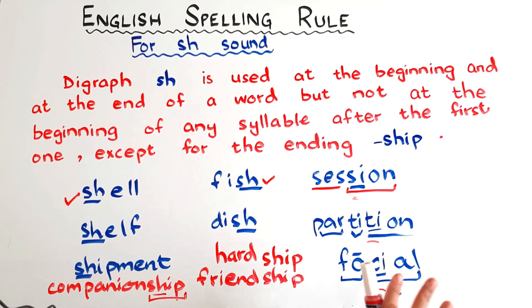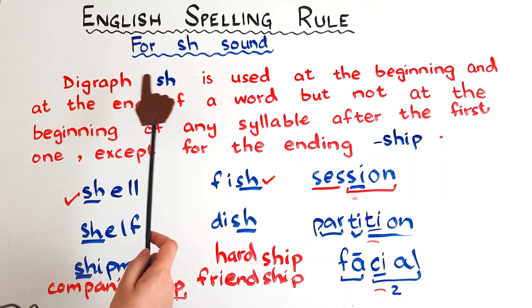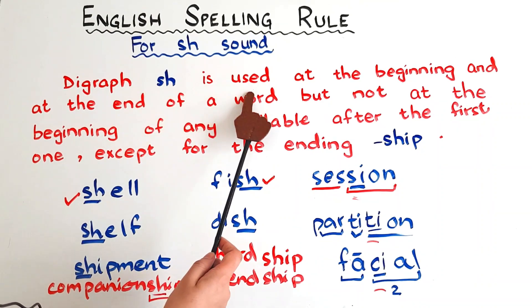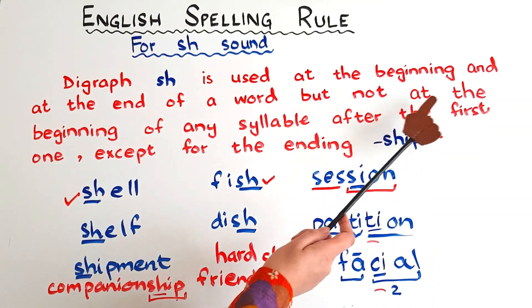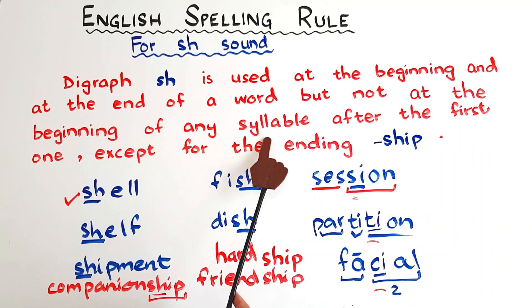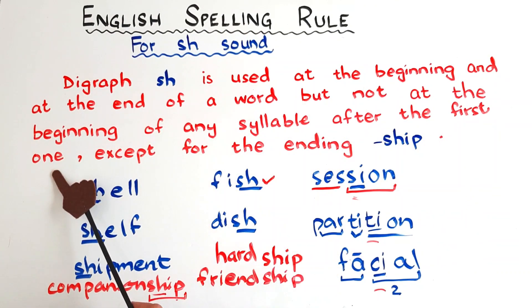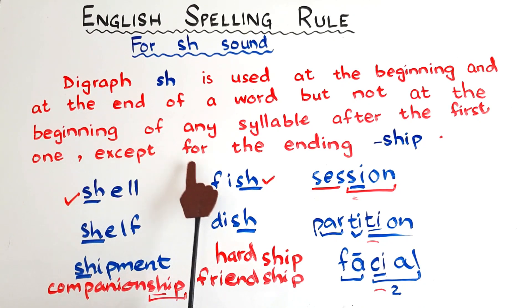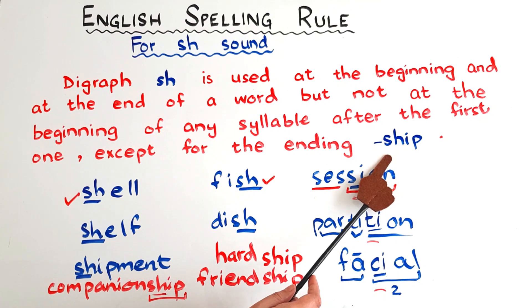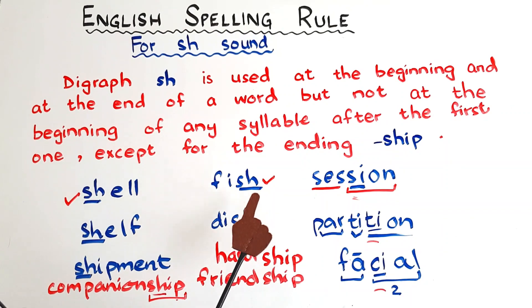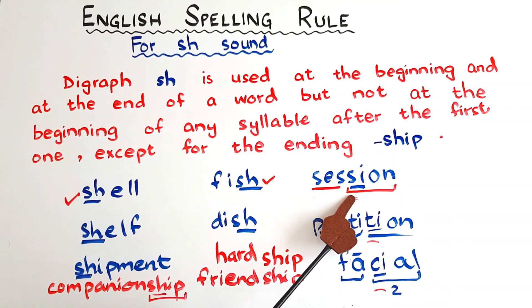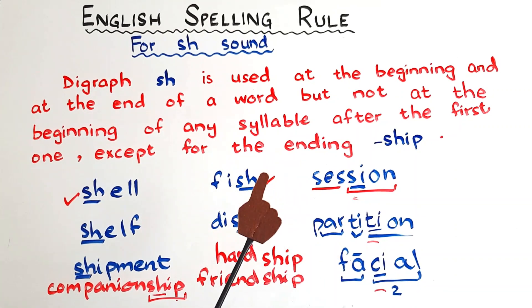So that was the explanation of the rule. Now let's read the rule: Digraph SH is used at the beginning and at the end of a word, but not at the beginning of any syllable after the first one. As I told you, after the first one — except for the ending '-ship.' We can use it at the beginning of a first syllable or at the end of a syllable, but we cannot use it at the beginning of any other syllable after the first one, except if the ending is '-ship.'